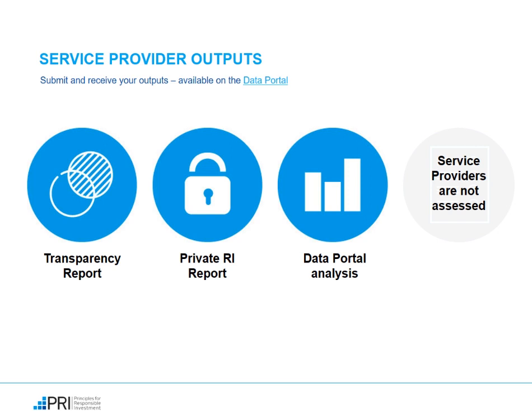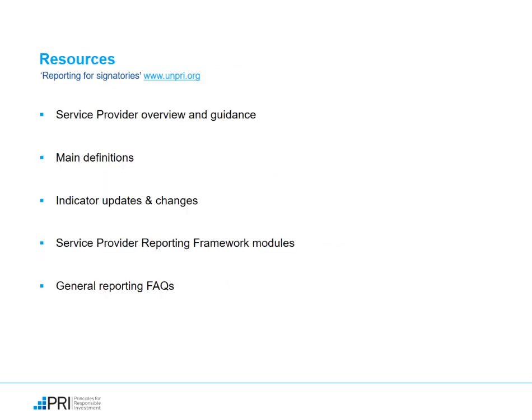All of your reporting outputs can be accessed via the Data Portal, where you will also find other signatories' reports and where you can view customizable snapshot reports. If you want to learn more about Service Provider Reporting, you can visit UNPRI.org. You can also review our Reporting Guidance Documents, including Service Provider Overview and Guidance, Main Definitions, Indicator Updates and Changes, Service Provider Reporting Framework Modules, and General Reporting Frequently Asked Questions.